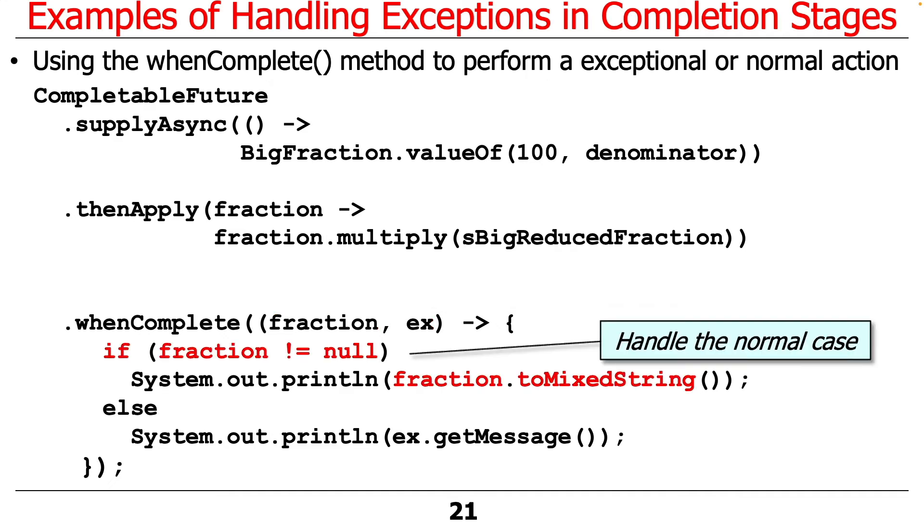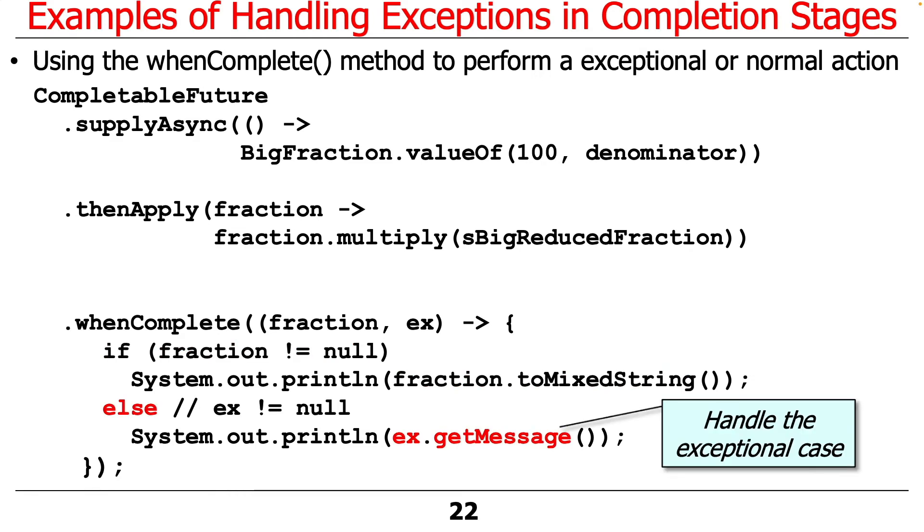In this case, if the fraction is non-null, in other words if it succeeded, then we go ahead and handle the normal case by printing the results as a mixed string, as a side effect. Otherwise, if it was null, if fraction was null and ex was non-null, we're going to print out the message associated with that particular exception. That's the reason why things went wrong, which in this case would say something like arithmetic exception or divide by zero probably. That would be the message that would come back.